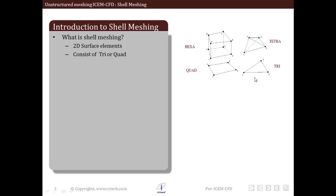As you can see here if you consider four types of mesh elements: hexa which is a volume mesh element, tetra which is again a volume mesh element, quad which is a 2D quadrilateral element, and tri which is a triangular 2D element. These two elements, quad and tri, come under shell meshing, that is surface meshing.